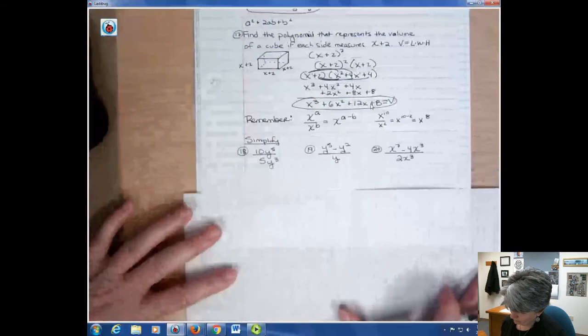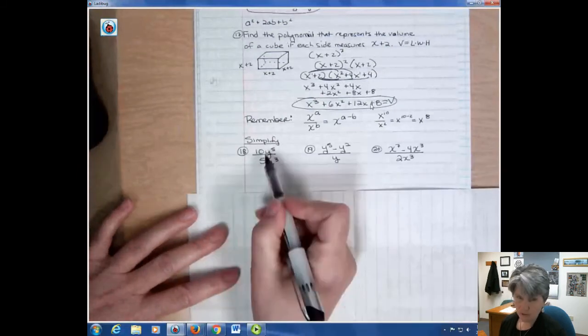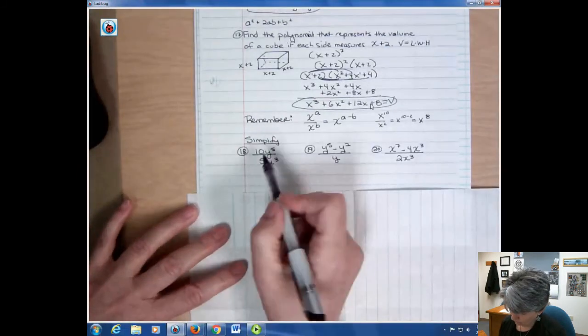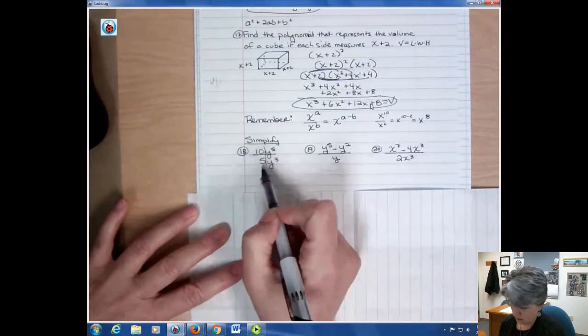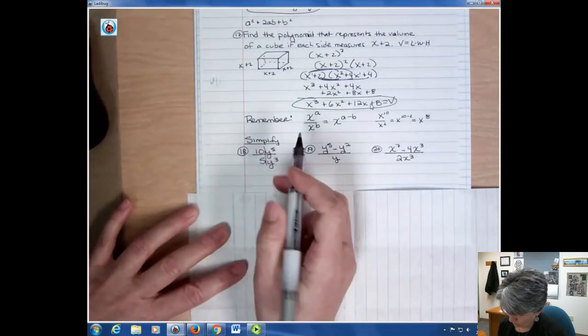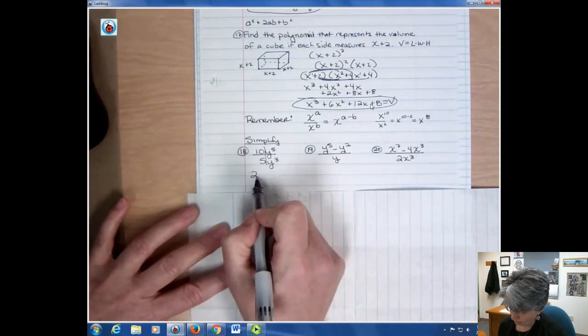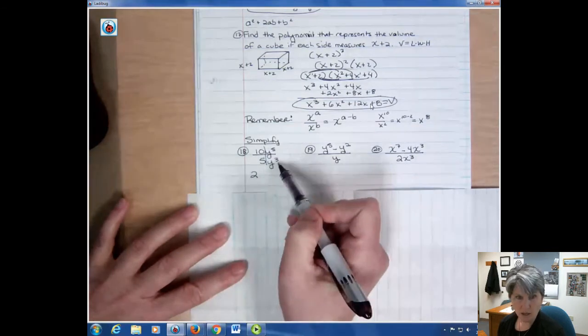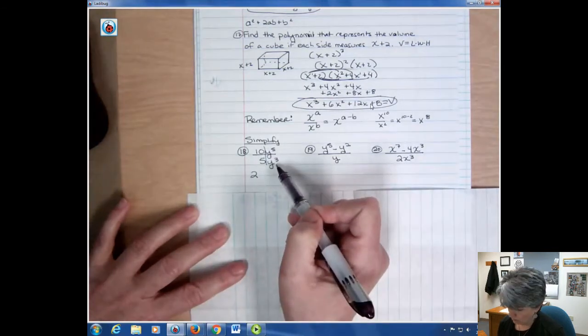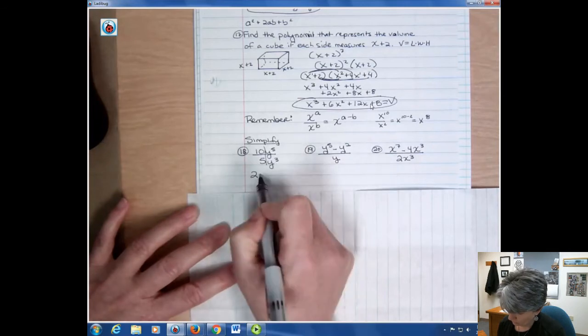So if you're asked to simplify something like this, then you think of it as two separate parts. You've got your number part, 10 divided by 5 is 2. And then you have your variable part. You had 5 on top and you canceled three of those or 5 minus 3. And that leaves y squared.